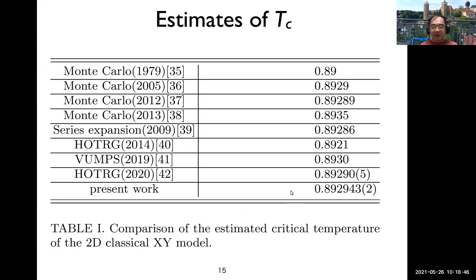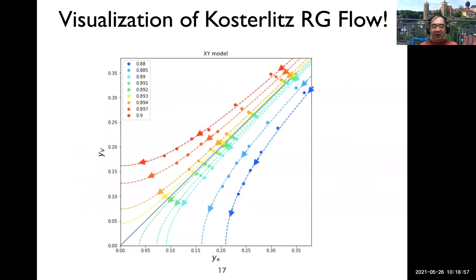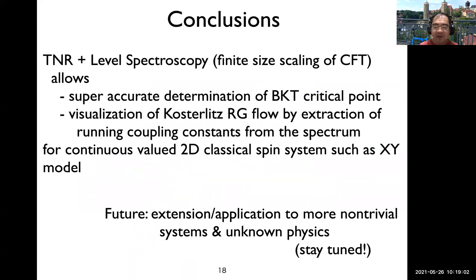So this is the final result. I think we can get one more digit of precision without much additional computational cost. We can also track the theorized RG flow. Sorry, and thanks for your attention.